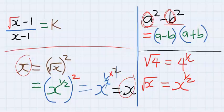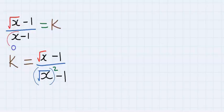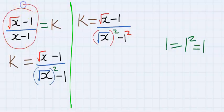From the beginning I am going to use this to modify this function. Hence k is now equal to square root of x minus 1 over x minus 1. Also, 1 is the same as 1 squared because 1 squared equals 1.